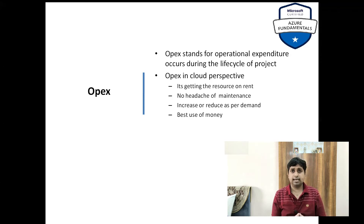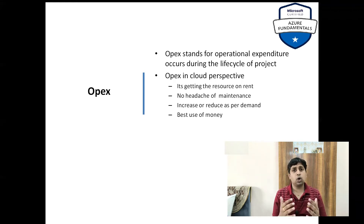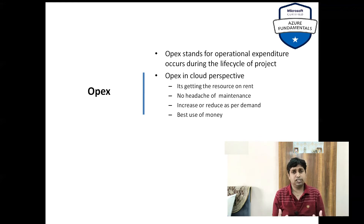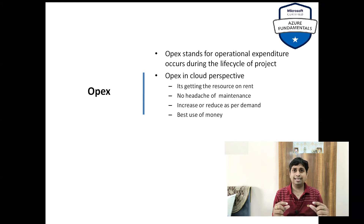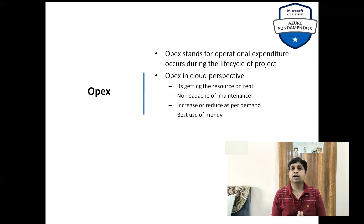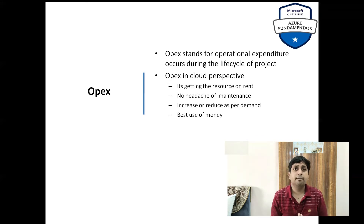Now let's look at the OPEX side. OPEX stands for operational expenditure. Here, you don't pay anything at the start — you only pay for what you use on a rental basis. Assume that you are starting a new software company with four or five people. You will take four or five small machines at the start on rent, and as you grow, you will keep taking more machines and more hardware on a rental basis. The advantage is your cost will be less at the start. If you need more infrastructure, you can build it at runtime by taking it on a rental basis. Also, you don't need any maintenance because you take it on a rental basis — it will be the cloud provider's problem to take care of maintenance and support.